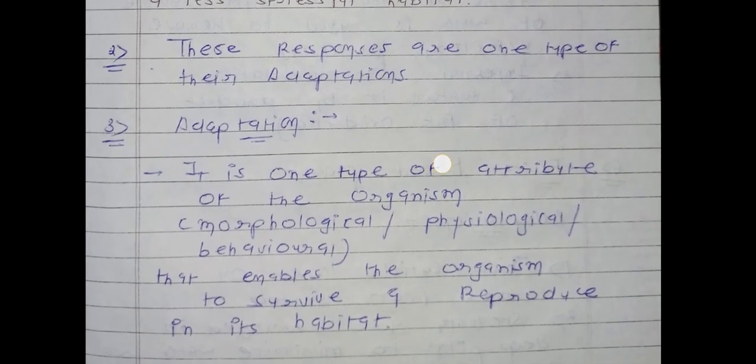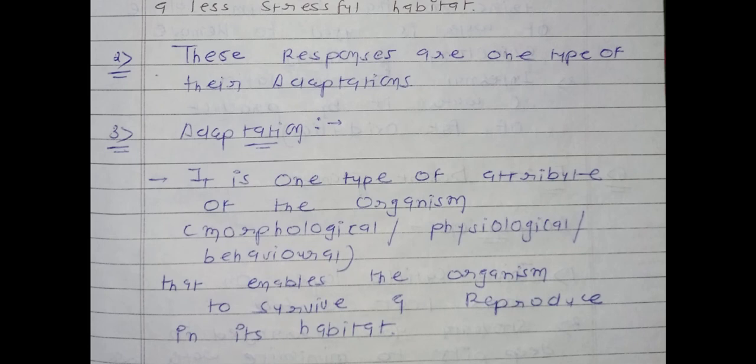These responses are one type of adaptation. Some responses are physiological in manner and some are in the sense of behavioral changes. These responses are one type of adaptation — meaning the reaction, response, or answer given by a living organism is known as adaptation.